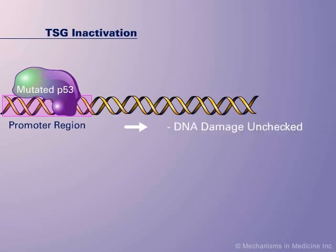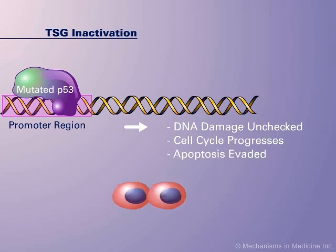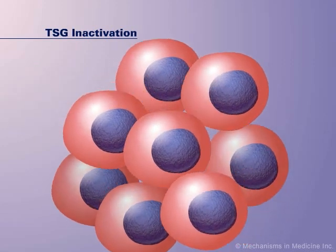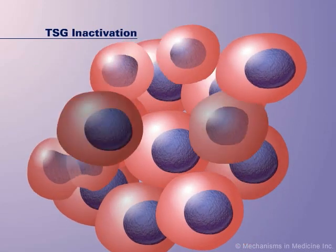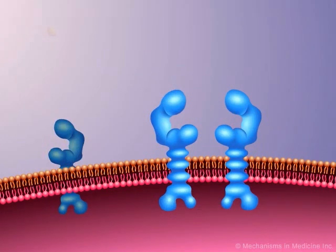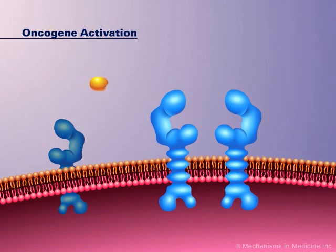Thus, DNA damage remains unchecked, faulty cells proceed through the cell cycle, and apoptosis is evaded. This creates a genetic condition in which the cell is more susceptible to further mutations. Another critical alteration that occurs in the development of NSCLC is the activation of oncogenes.